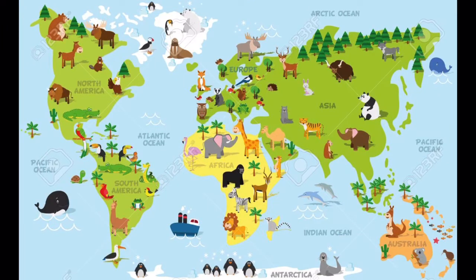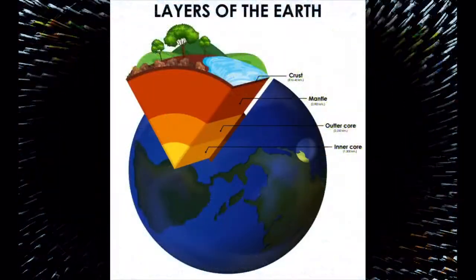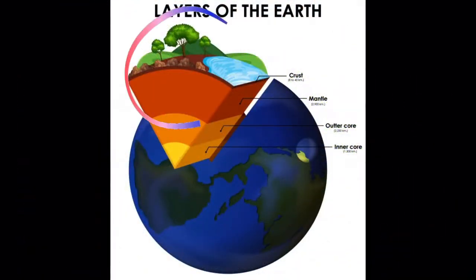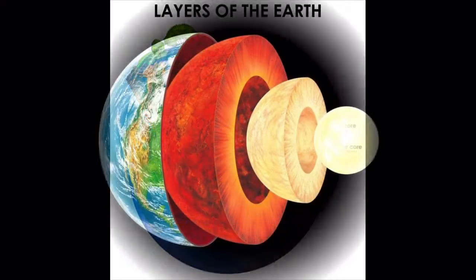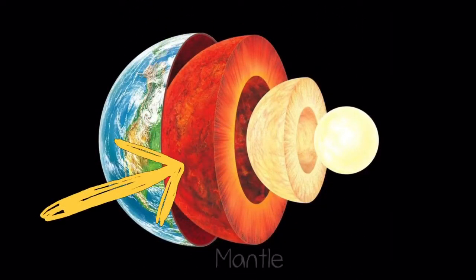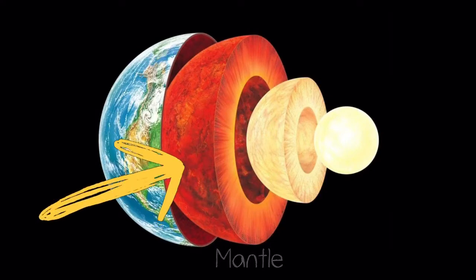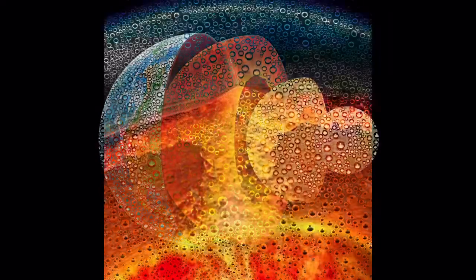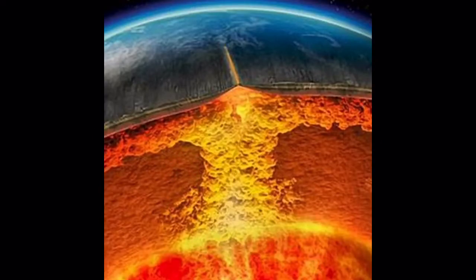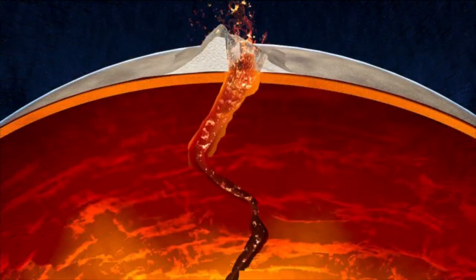All life — plants, flowers, animals — are on the crust. Even our home, our school, and where we are sitting right now is on the crust of the earth. The mantle is the second layer of the earth. It is a very thick layer made up of molten or melted rocks. Sometimes hot lava comes out from the mantle through the crust in the form of volcanoes.